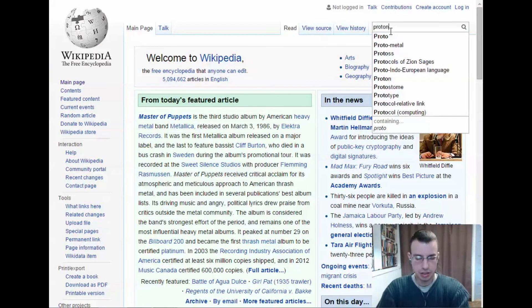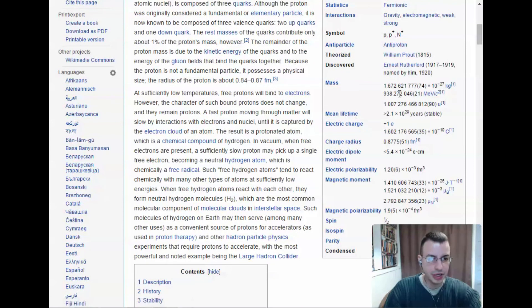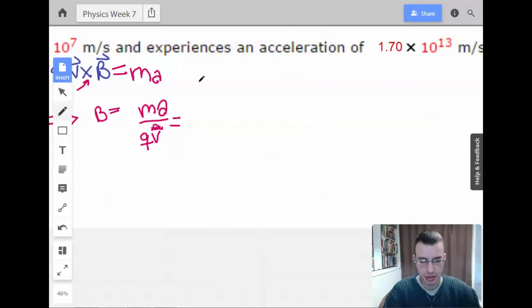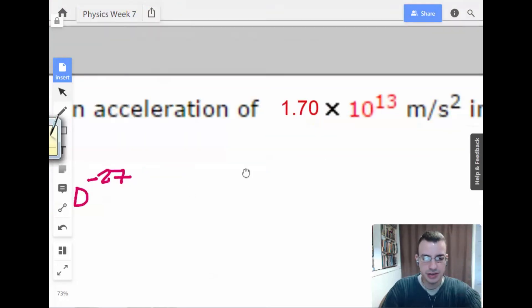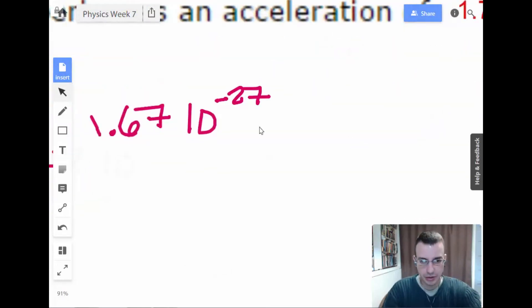All right. So, mass. Mr. Proton. So the mass of a proton is 1.67×10^-27. So we have 1.67×10^-27, which is not very many kilograms at all. So then we have an acceleration of 1.7×10^13, which is a lot.